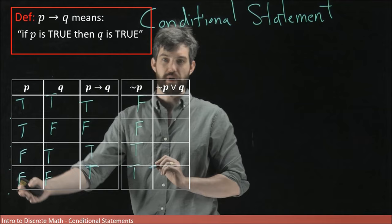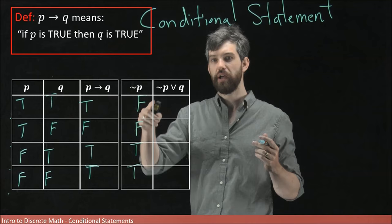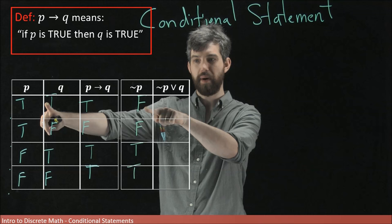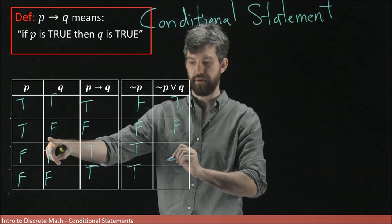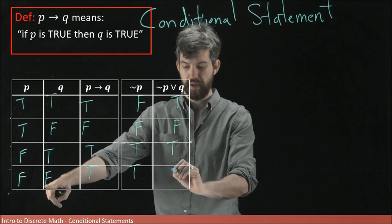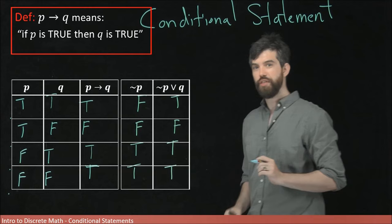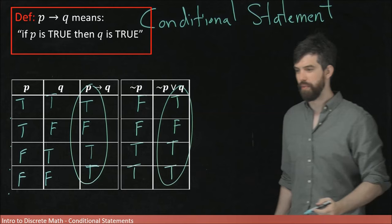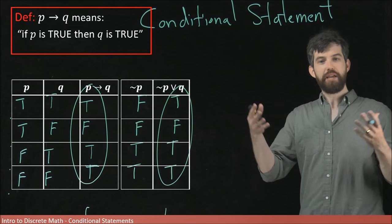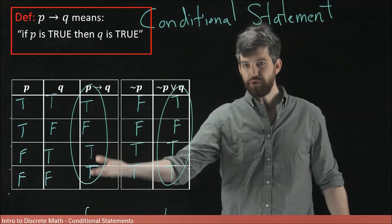Now we have an or statement: not P or Q. In the first row, Q is true and not P is false — since it's an or, I only need one to be true, so this is true. Next, false and false gives false. Then true and true gives true. And false and true gives true. The big takeaway: the P implies Q column and the not P or Q column are exactly the same.